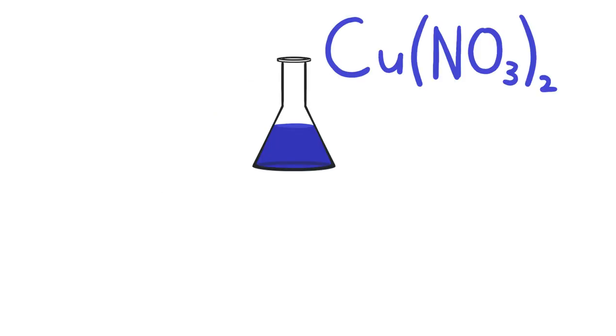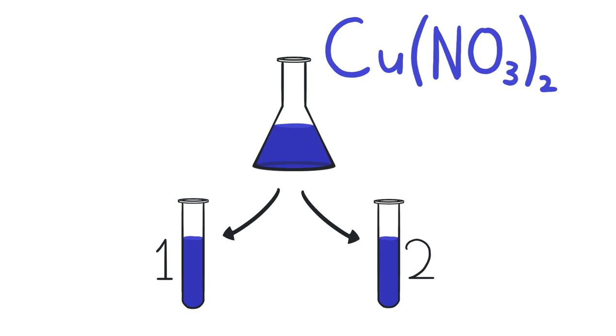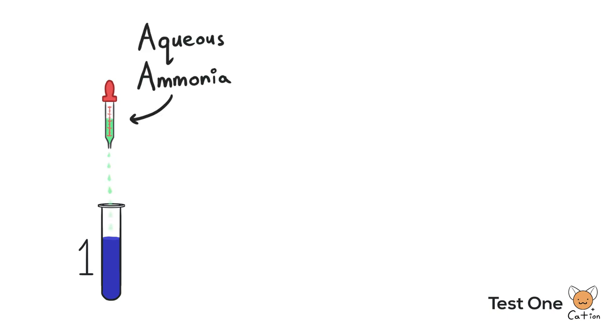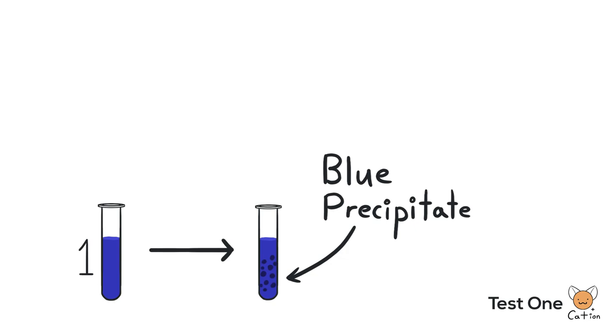We will split the unknown solution into two samples for three different tests. For the first test, we test for cations by adding aqueous ammonia in excess. Blue precipitates form and that observation confirms the identity of copper ion in the unknown solution.